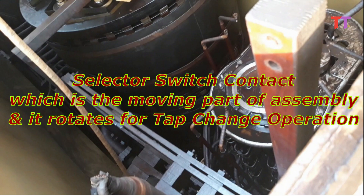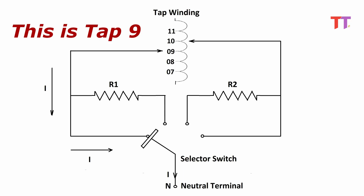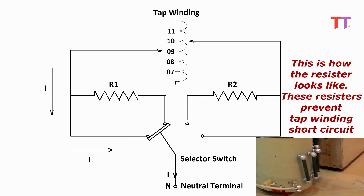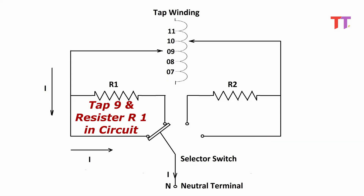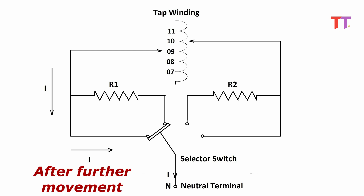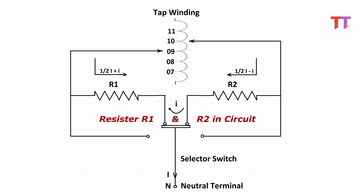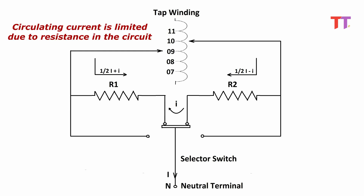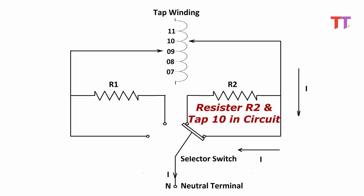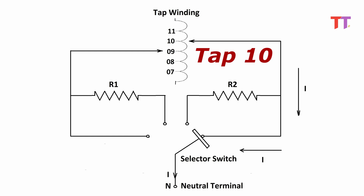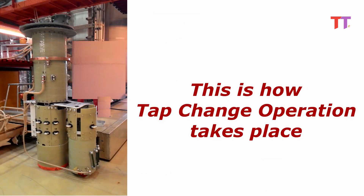The selector switch contact, which is the moving part of the assembly, rotates for tap change operation. Starting at tap 9, while moving, resistor R1 comes into circuit. These resistors prevent tap winding short circuit. Now there is tap 9 and resistor R1 in circuit, hence current flows through the tap winding, which is the obvious low-resistance path. After further movement, resistors R1 and R2 come into circuit, so a small circulating current flows through this closed path, limited by the resistance. Now there is resistor R2 and tap 10 in the circuit — current flows through tap 10, which is a low-resistance path. Finally, the selector switch moves to tap 10. This is how the tap change operation takes place.